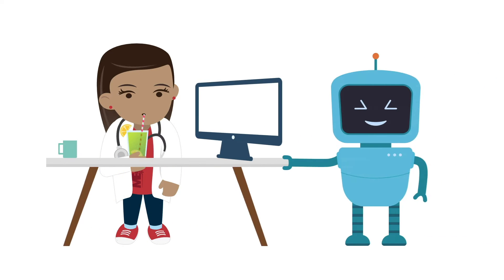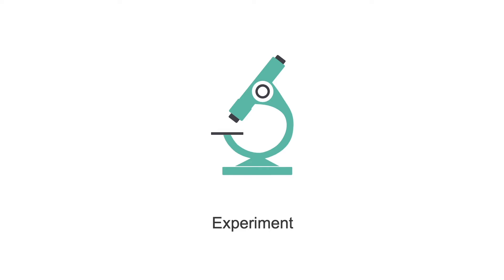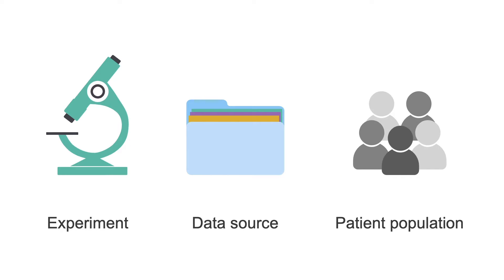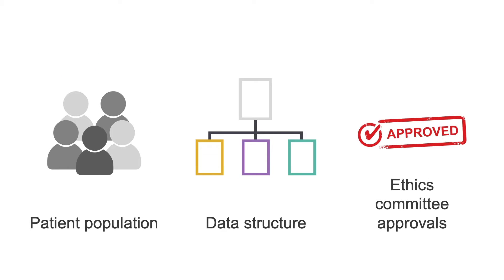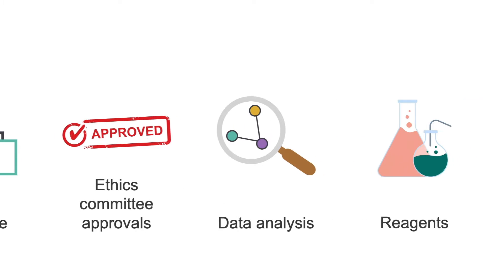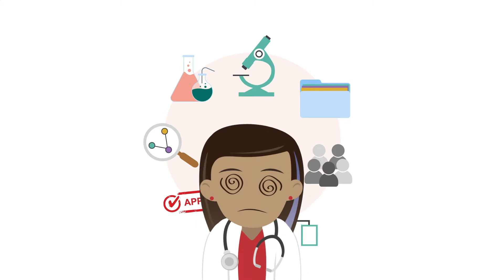But with ChatGPT, this task can become a whole lot easier. Writing a methods section usually involves describing your experiment, data source, patient population if applicable, data structure, ethics committee approvals, data analyses, reagents used, and so on. While it's crucial that your paper includes all the necessary details, writing them up can feel like a chore.